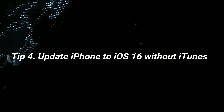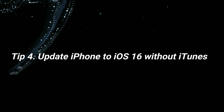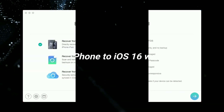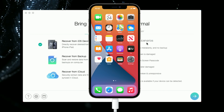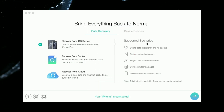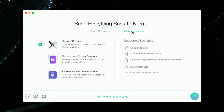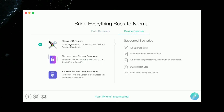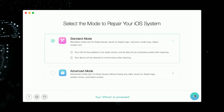In the last tip, we will show you how to fix iPhone won't update to iOS 16 without iTunes. Run iMobi Phone Rescue on your PC or Mac and connect your iPhone via USB cable. Select Device Rescuer Mode and choose Repair iOS System. Then select Standard Mode and put your iPhone into Recovery Mode.